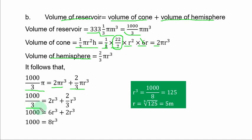It follows that volume of the reservoir equals volume of the cone plus volume of the hemisphere. You have 1000/3 equal to 2r³ plus 2/3 r³. To clear the fractions, multiply by 3. You are left with 1000, 6r³, and 2r³. If you add the like terms, you have 8r³. So 1000 equals 8r³.